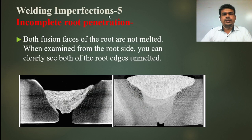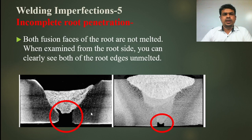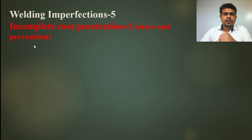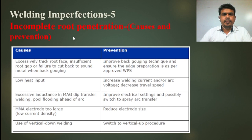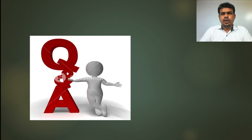Incomplete root penetration occurs when both fusion faces of the root are not melted. When examined from the root side, you can clearly see both root faces are unmelted, as shown in the pictures. This is called incomplete root penetration. The causes are the same as those explained for incomplete penetration previously. If we maintain the correct procedures, we can prevent this type of imperfection.